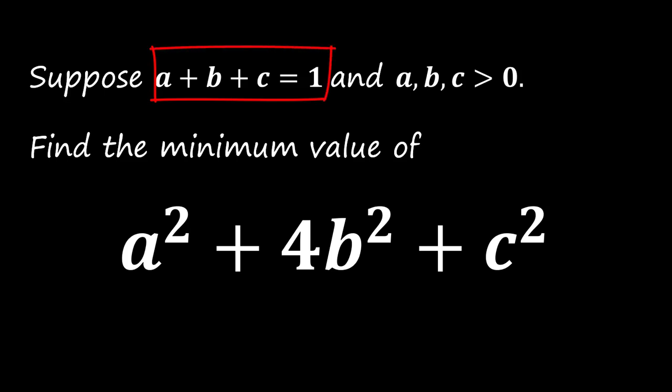Suppose a plus b plus c equals 1, and a, b, c are all greater than 0. We need to find the minimum value of a square plus 4b square plus c square.